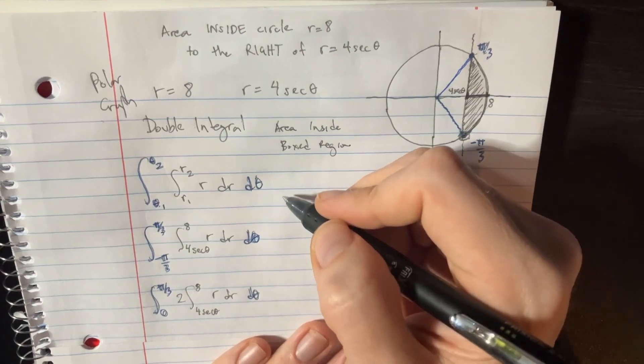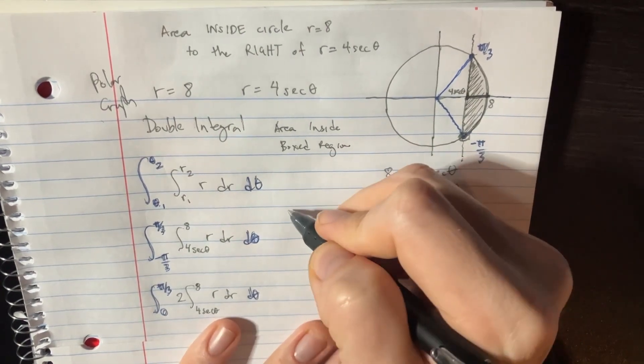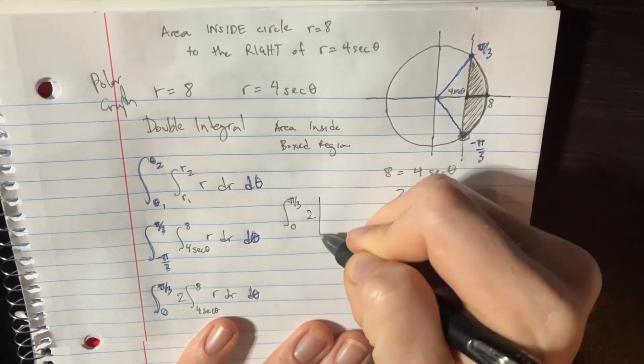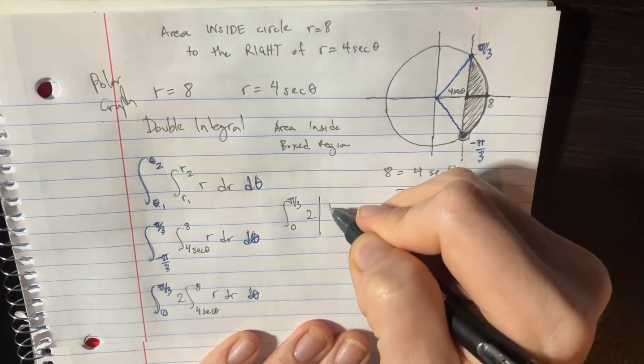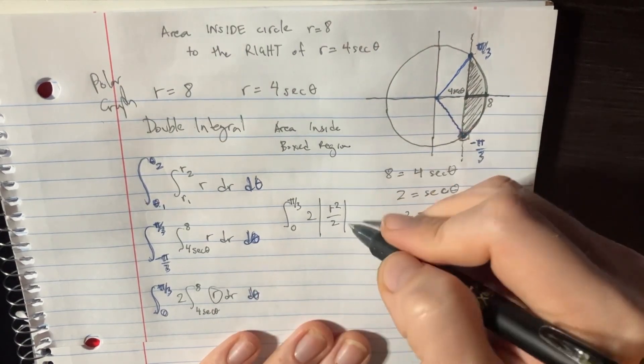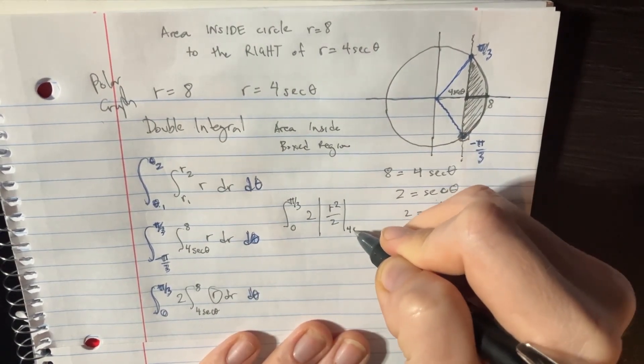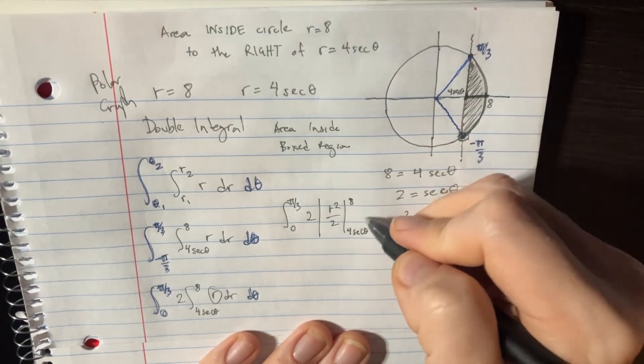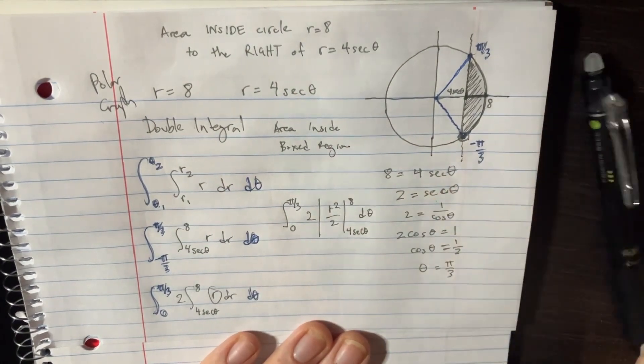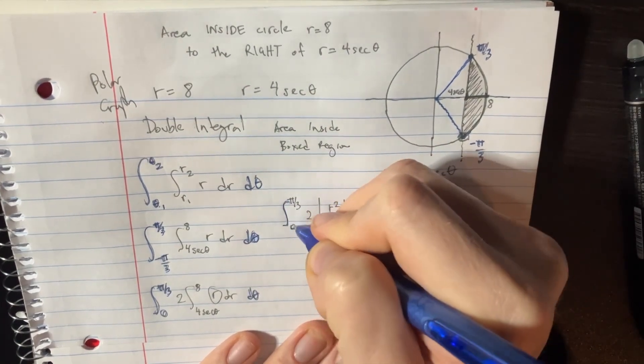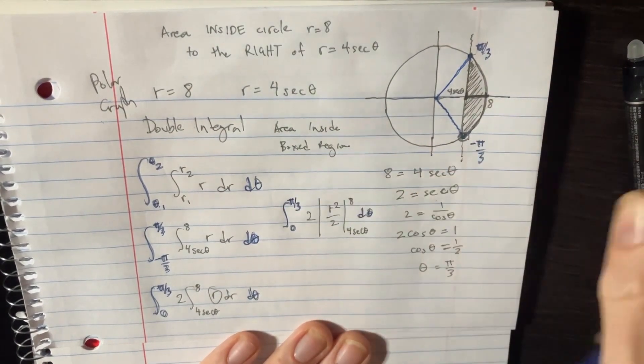So we've got again from 0 to pi over 3, here's the 2, and then we can go r squared over 2. That's just integrating r right there. And then we put a little 4 secant theta here and our 8 there. And we just did the first one. All right, there's still the second one to do.